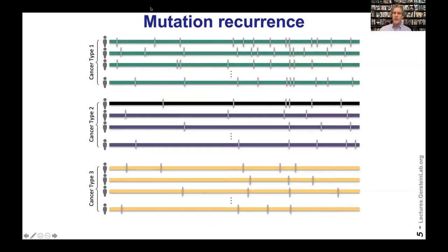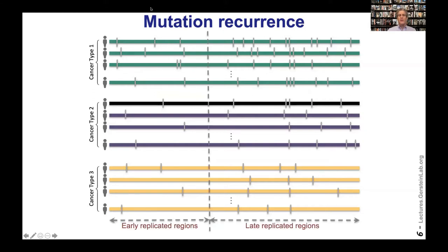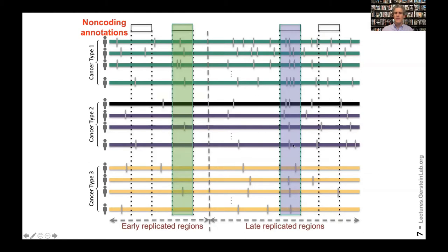First, background mutation rate estimation. One of the main ways we find drivers in cancers is through looking at mutational recurrence within a cohort. One of the problems is that this mutational recurrence can be confounded by genomic covariates such as replication timing. We have a lot more mutations in late replicating regions than early replicating regions. So if you look at recurrence, we might be fooled into thinking a region is a driver when it simply has lots of mutations because it's late replicating.